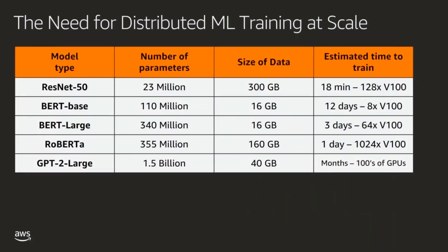Switching verticals, let's talk about what the distributed ML training landscape looks like. Natural language processing, or NLP, is a hard problem to solve. The complexity — the number of parameters — and the data size are exponentially growing, as shown in the table. This translates to significant time to train and large numbers of GPUs needed. You'll hear BERT a lot in this realm — it stands for Bidirectional Encoder Representations from Transformers.